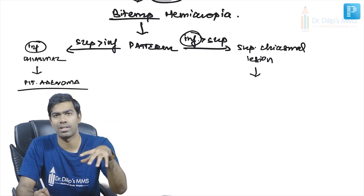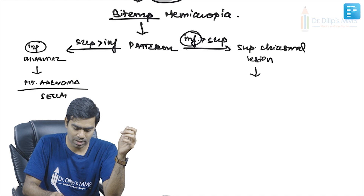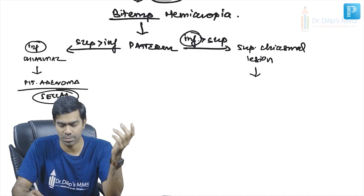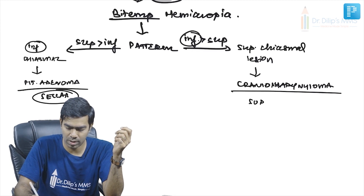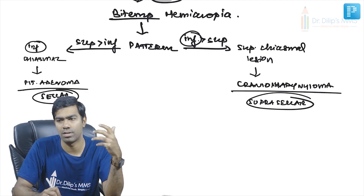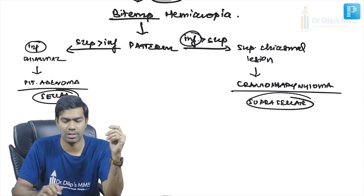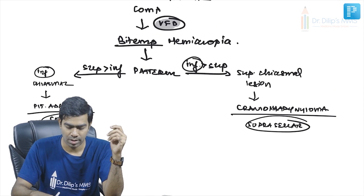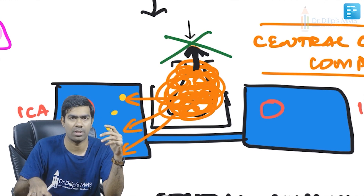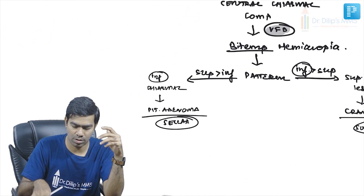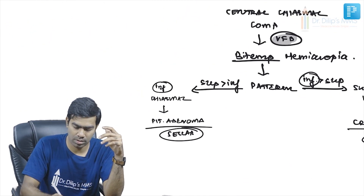A superior chiasmal lesion — where inferior vision loss is greater — indicates a suprasellar lesion, most commonly a craniopharyngioma. Craniopharyngioma compresses from the top and involves the superior fibers, producing inferior vision loss greater than superior vision loss.